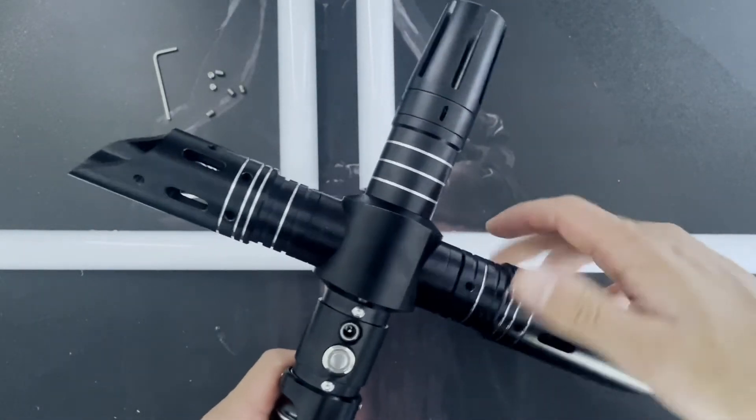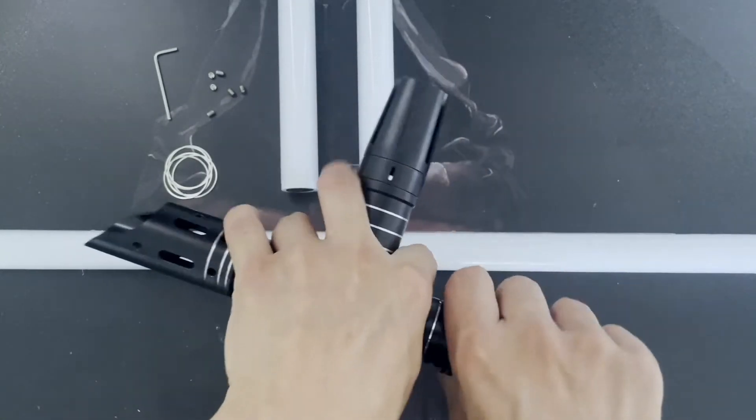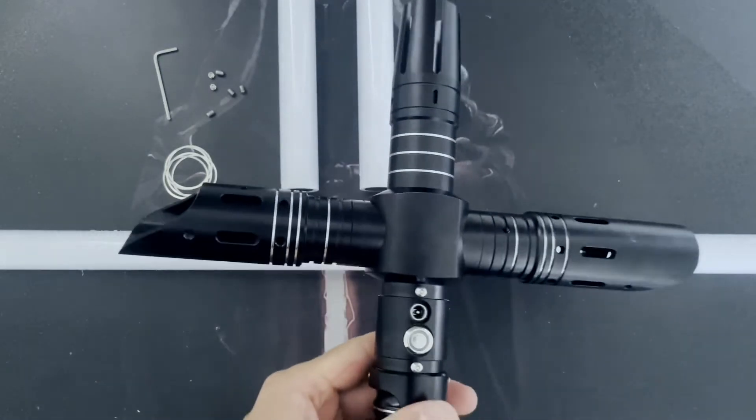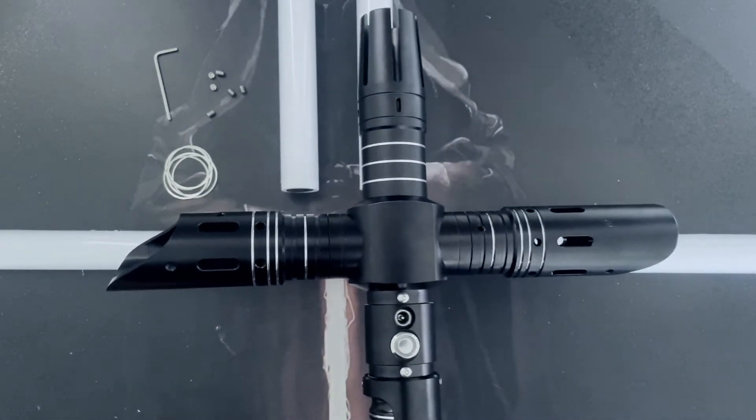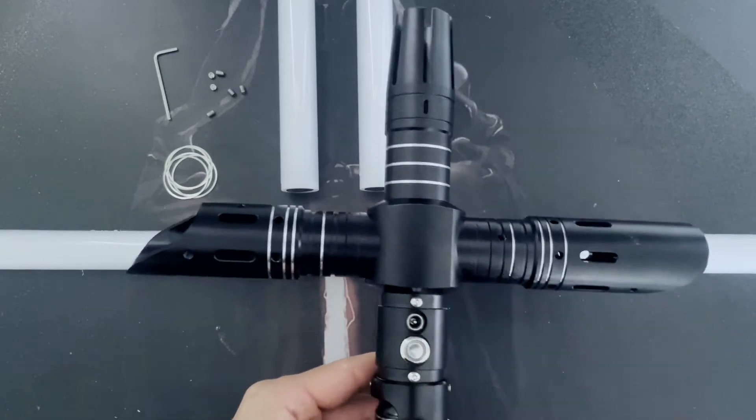I'm going to do the same on the other side. Again, just hold that section and twist that. So you've got your cross guard together. Before you put the blades in, you want to have a look at these side emitters.